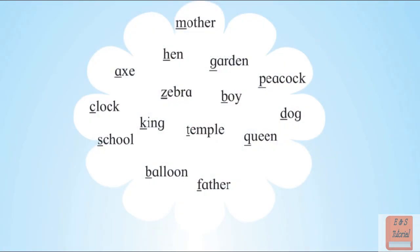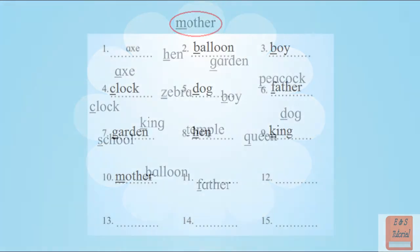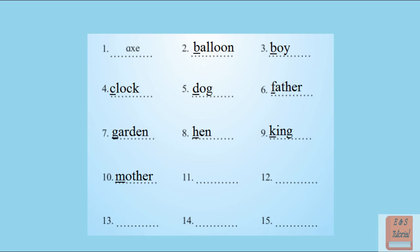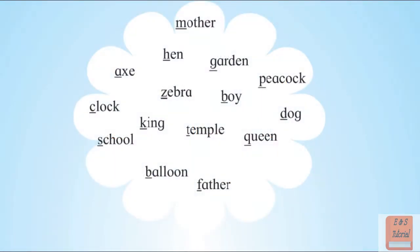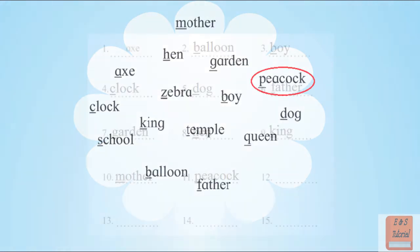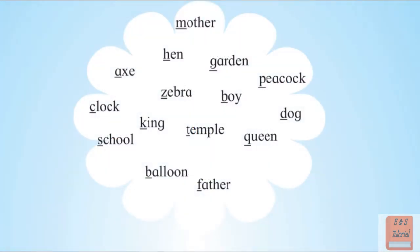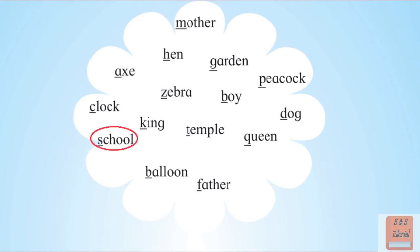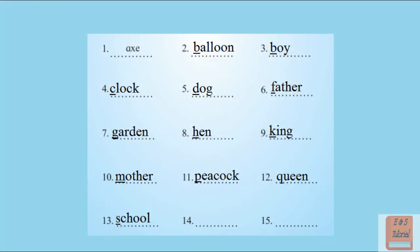There is no word with L. The next word is with M. With M, the word given is mother. Again, there is no word with N. There is no word with O. So the next word is with P — P for peacock. Then we have the word with Q — Q for queen. With R, there is no word given. So after R, the alphabet is S. With S, the word school is given.